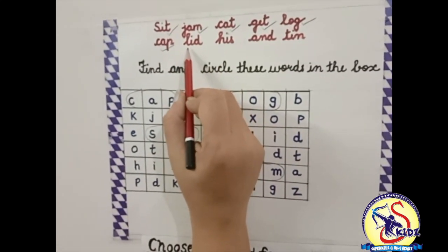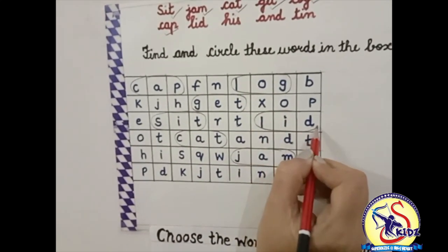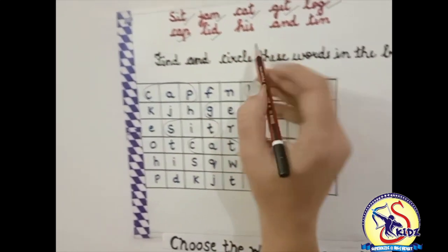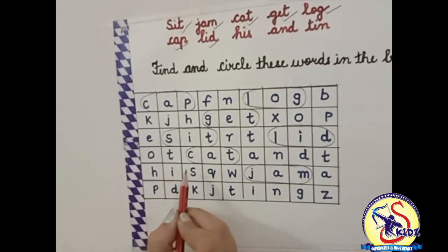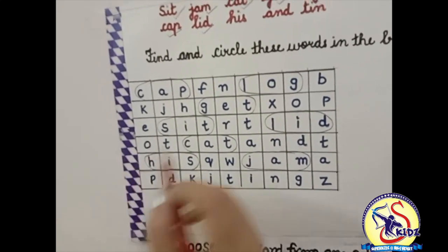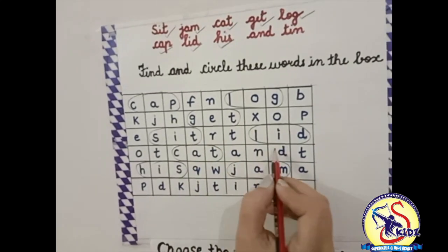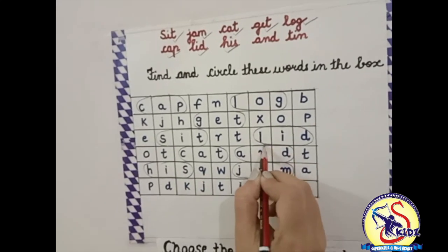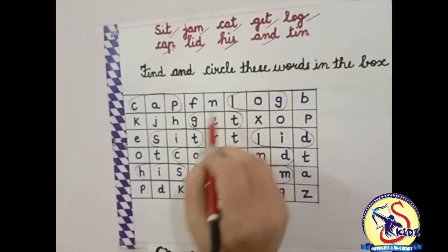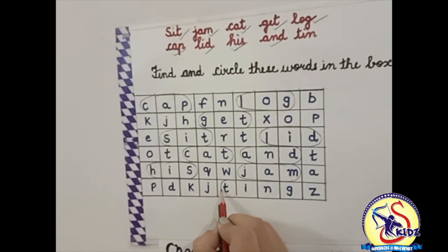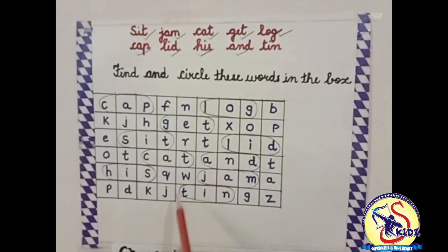Our next word is L-I-D, lid. Let's find out the word lid — here is the word lid, circle this word. Our next word is H-I-S, his. Now let's see where the word his is — here is the word, circle this word. Our next word is A-N-D, and — yes, this is the word and, circle the word. Our next word is T-I-N, tin — yes, this is the word tin, circle the word. So this was the first exercise: find and circle the words in the box.